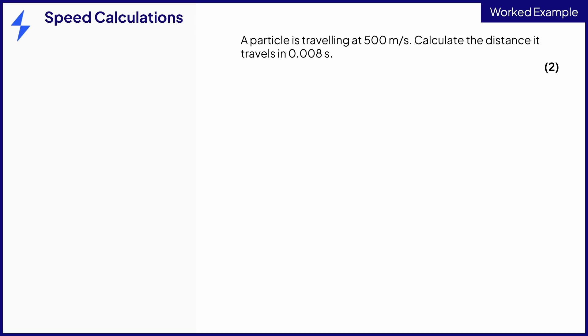Here is a typical two-mark speed calculation. A particle is travelling at 500 meters per second. Calculate the distance it travels in 0.008 seconds.